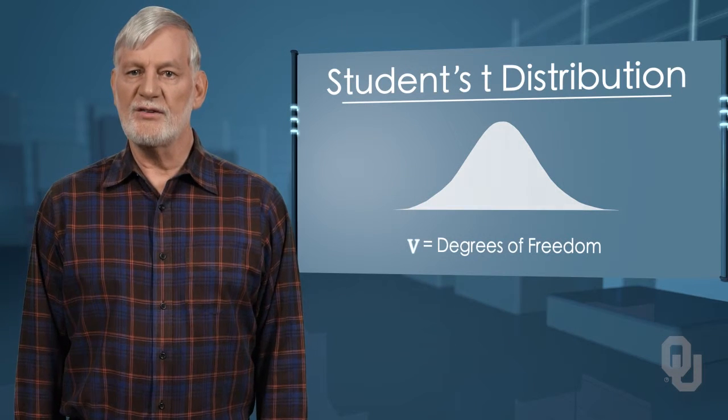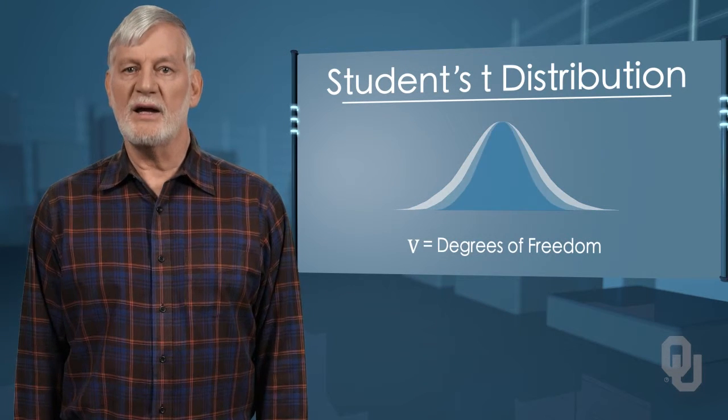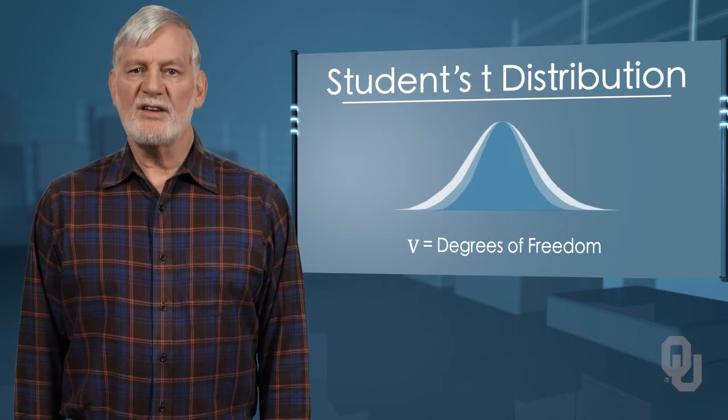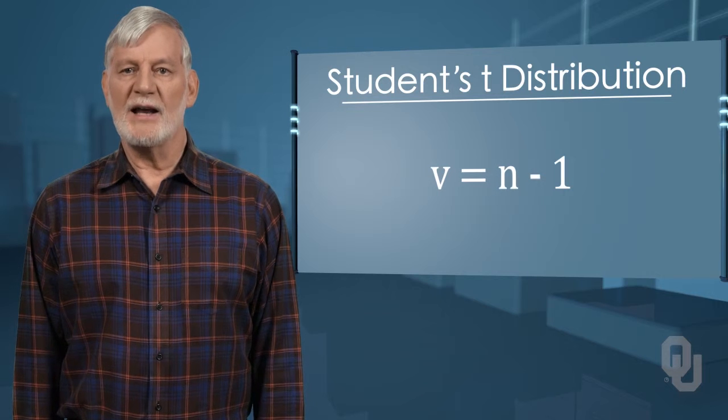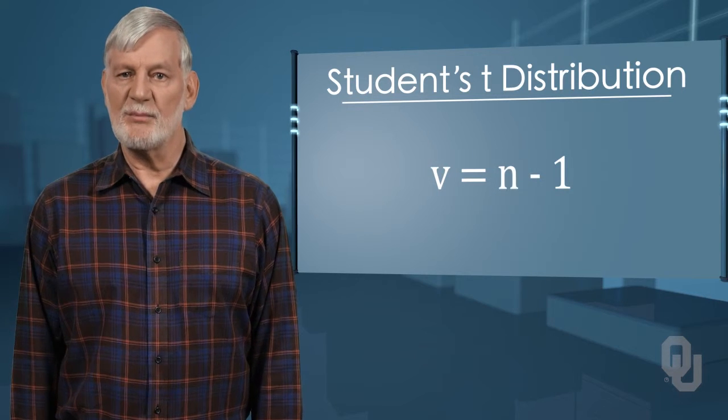ν is called the degrees of freedom of the distribution and depends on the sample size. For this type of problem, the degrees of freedom is ν equals n minus 1, where n is the sample size.